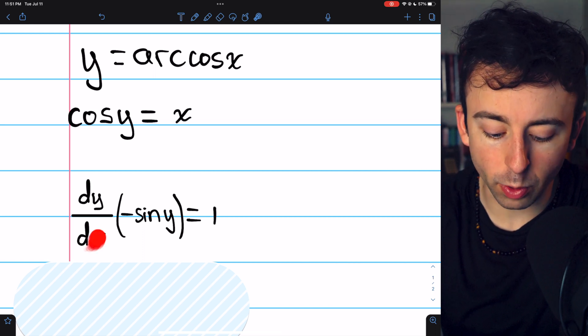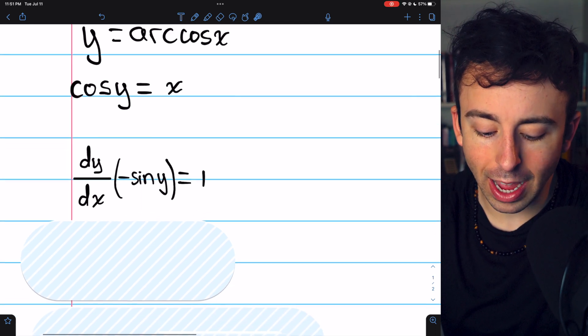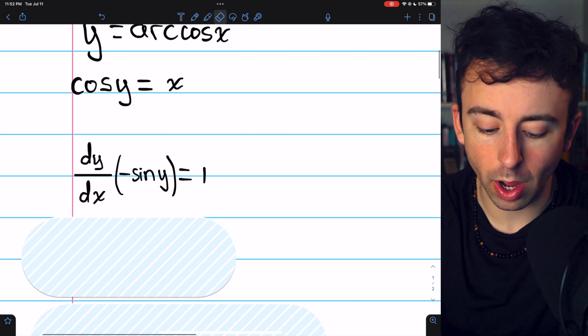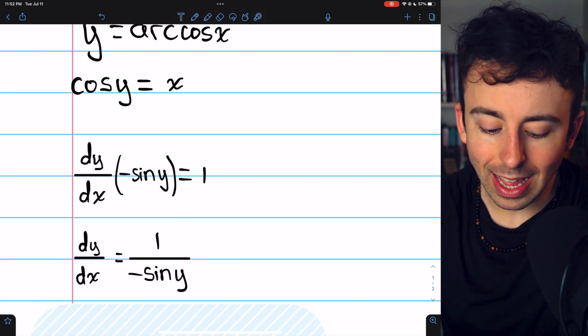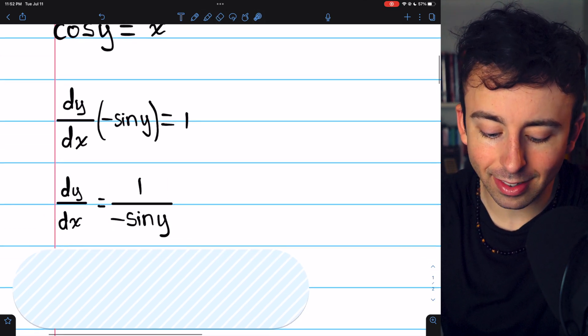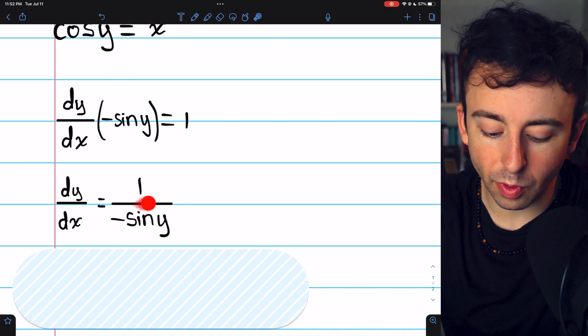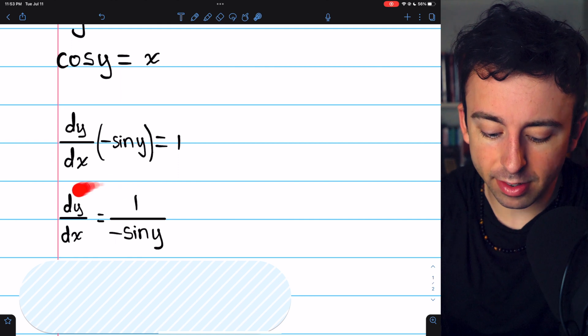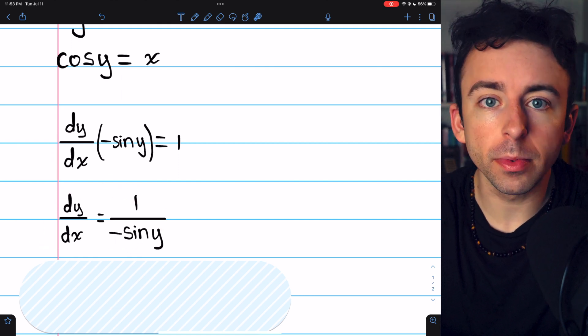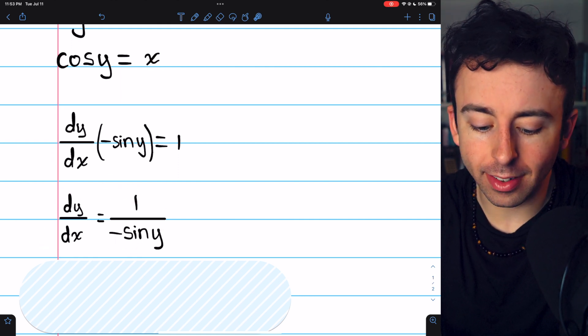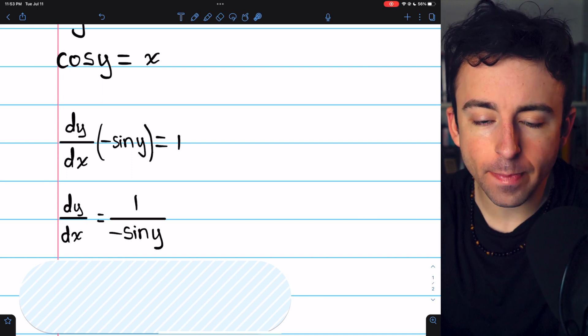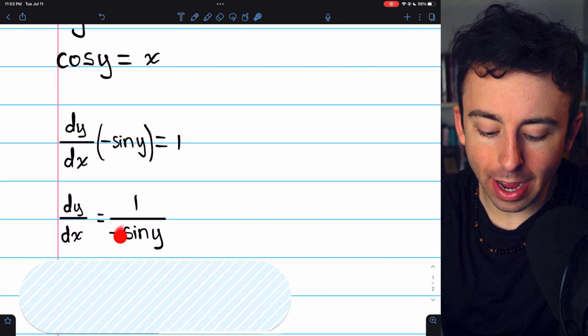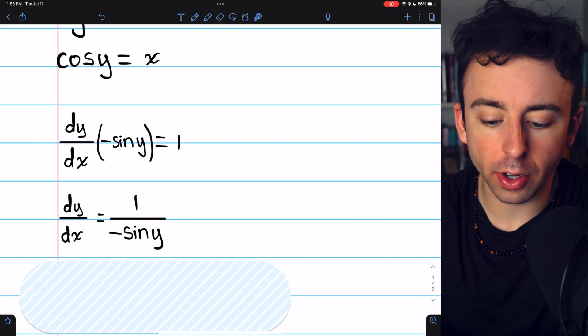Since we're trying to solve for dy/dx, let's divide both sides by negative sine y to get it by itself. That gives us dy/dx equals 1 divided by negative sine y. We would like to have this derivative expressed in terms of x. Since x is equal to cosine y, let's see how we can express sine y in terms of cosine.